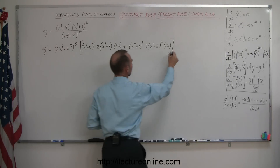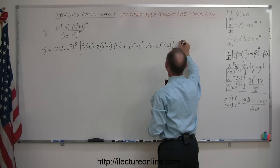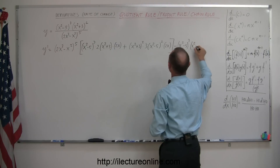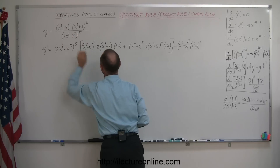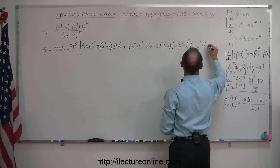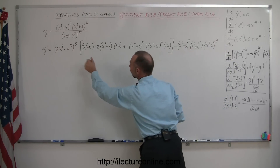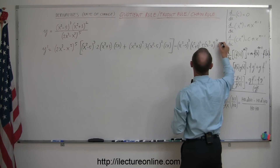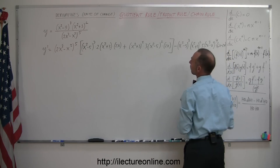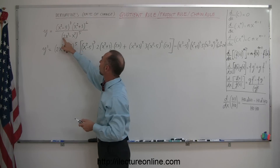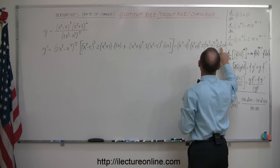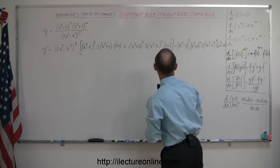Minus the numerator — which is x squared minus 5 to the third power, times x squared plus 3 to the second power — times the derivative of the denominator. We have to use the chain rule, so it would be 5 times 2x cubed minus x squared to the fourth power, times the derivative of what's inside, which is 6x squared minus 2x. That's because multiplying 2 times 3 gives 6, and subtracting 1 from the exponent makes 3 become 2, and it's minus 2x to the first power.